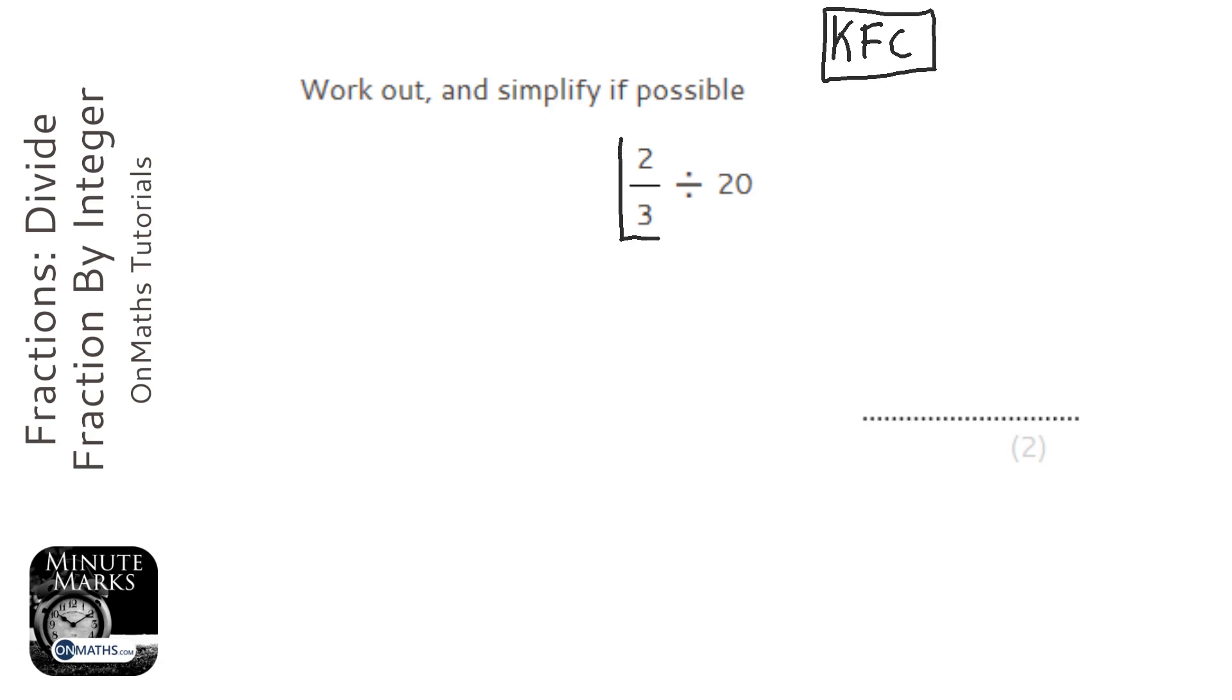We're going to keep that first thing, which is a fraction, the same. We're going to flip this, and we're going to change this to a times. So keep that first fraction the same - we don't do anything to that - but let's change that divide to a times.